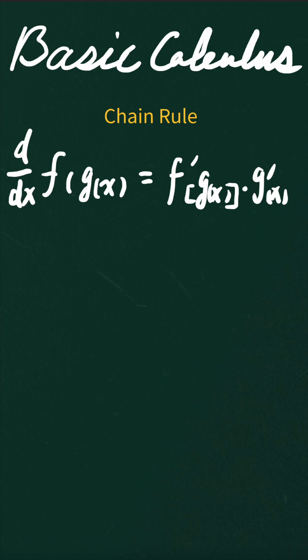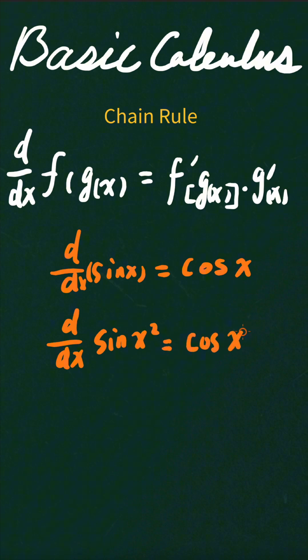I'm going to use some examples to show how it works. We have learned the formula for the derivative of sine x, which is equal to cosine x. What if you change the variable x to be a function? Let's say you want to find the derivative of sine x squared. Then it should be the derivative of f(g(x)), which is cosine x squared, times the derivative of g(x).